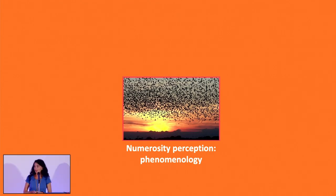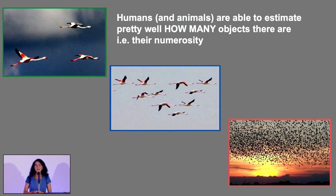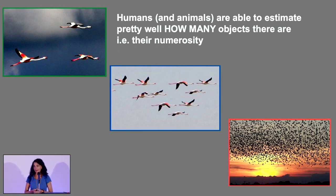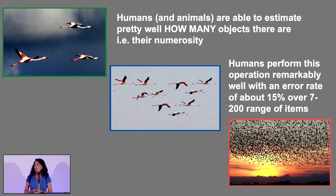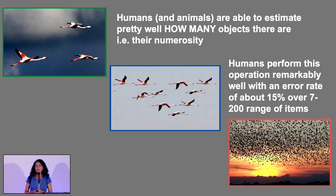What is numerosity perception? Humans, but also animals, have this very peculiar ability to estimate pretty well how many objects or items are in a scene. We perform this task with an error rate of roughly 15%, over a range of items from about 5 or 7 up to 200. This uncertainty is actually constant over the entire range — something very peculiar.